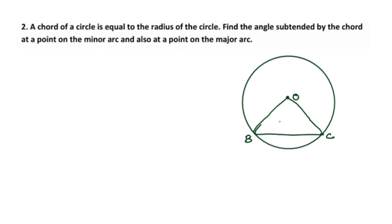This triangle is an equilateral triangle. We need to find the angle subtended by the chord at a point on the minor arc. The two arcs formed are the minor arc BC and the major arc BC.